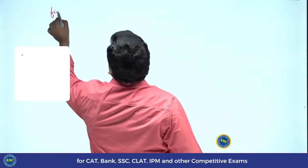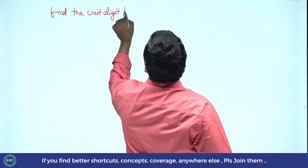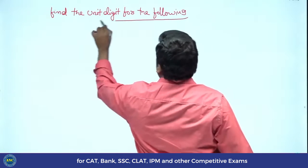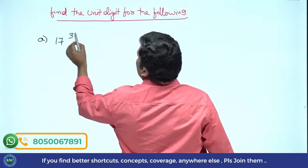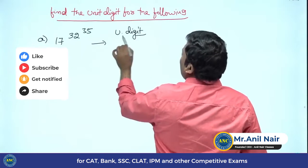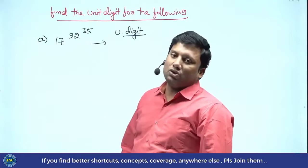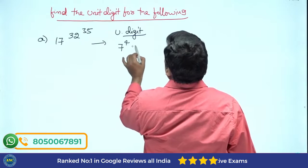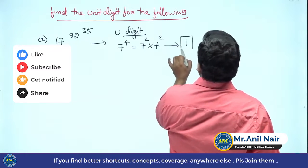Find the unit digit for the following. First problem: 17 power 32 power 35. Whenever you are finding the unit digit of highest powers, concentrate on the first power. Is 32 divisible by 4? Definitely yes — 4 into 8 is 32. So the answer is A power 4, which is 7 power 4. That is 7 squared into 7 squared: 49 times 49 — 9 nines are 81, unit digit is 1.